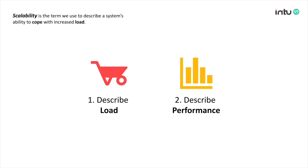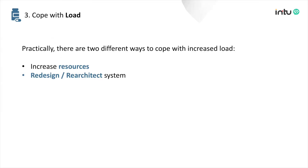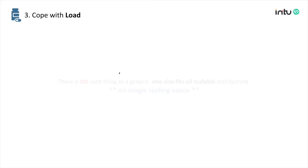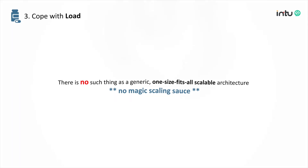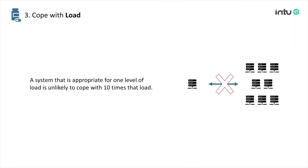Let's finish today's video by looking at different approaches to cope with load. Practically, there are two different ways to cope with increased load: first, increase the resources; second, redesign or re-architect the system. One thing to note is that there's no such thing as a generic, one-size-fits-all scalable architecture — there's no magic scaling sauce. A system that is appropriate for one level of load is unlikely to cope with ten times that load.